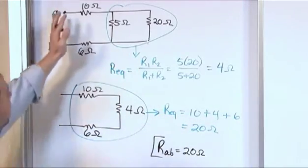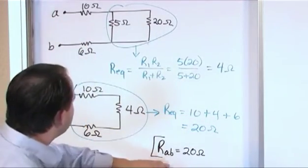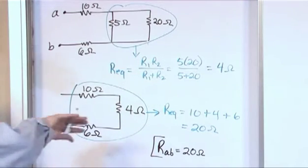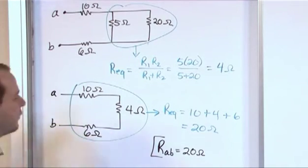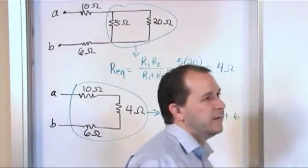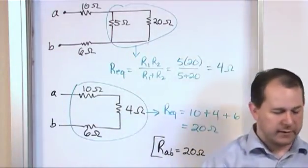So again you could build this on the bench and then you could build a single resistor with 20 ohms, and looking from terminals A and B which might be the source or some other part of the circuit, you're only going to see 20 ohms there. That's just the way the equivalent guy works.